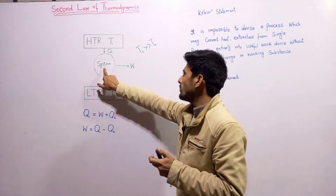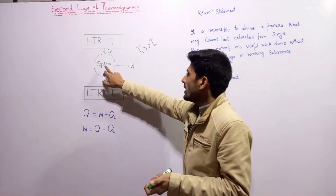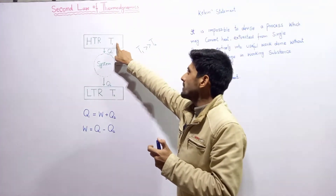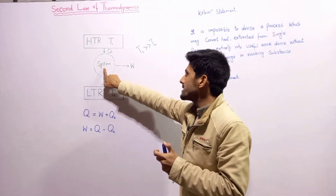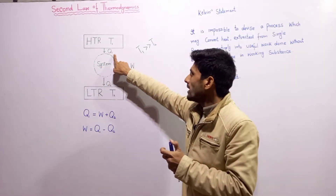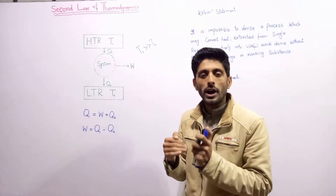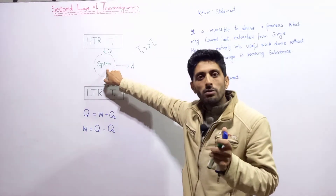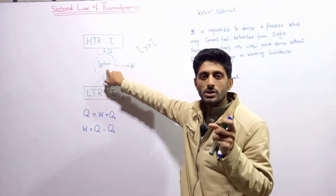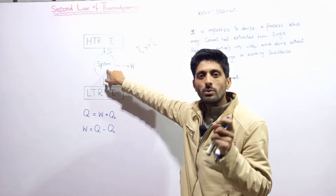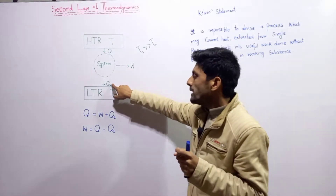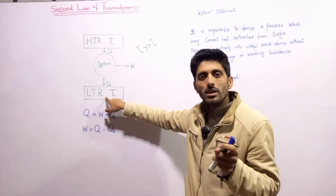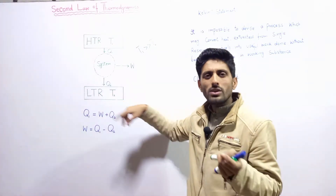Here is the heat engine. The system — the heat engine — will absorb heat from a high temperature reservoir. The heat absorbed by the system is equal to Q1. Some part of absorbed heat Q1 from the high temperature reservoir is converted into useful work done, and the remaining heat is expelled by the system toward the sink, toward the low temperature reservoir.